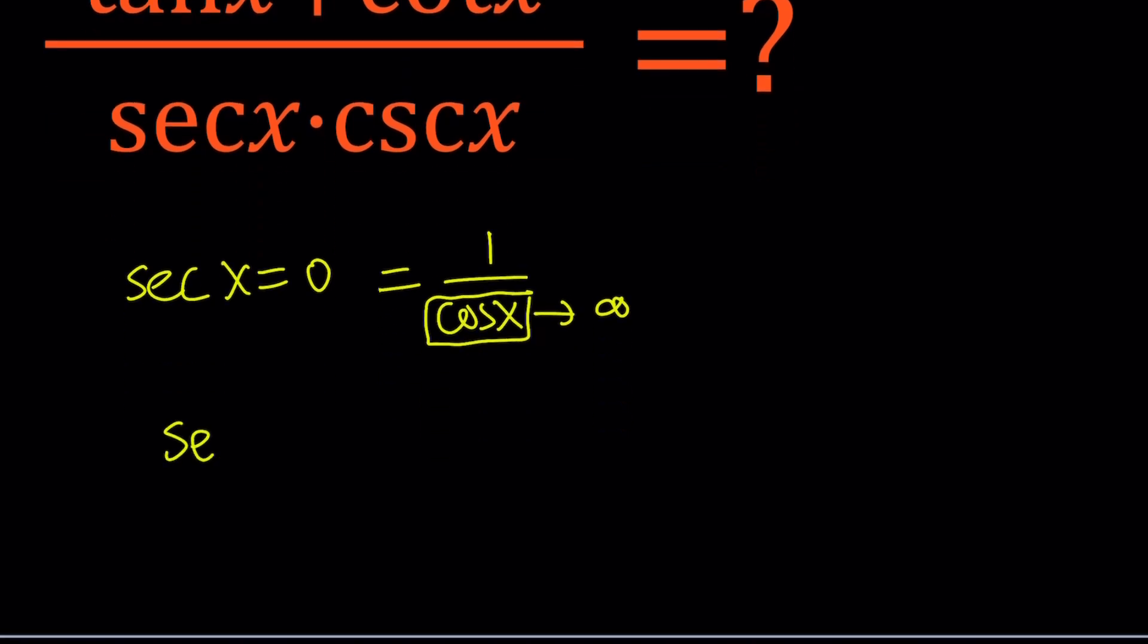A well-known identity, secant squared x equals 1 plus tangent squared x. Well, if secant is 0, secant squared is also 0. But if 1 plus tangent squared is 0, that means tangent squared x is equal to negative 1, and we don't have any real solutions for this. Are there any complex solutions? Something to think about.